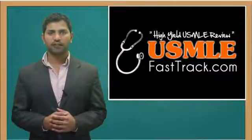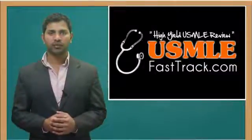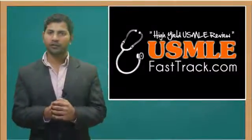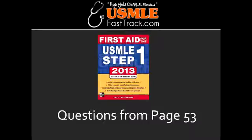Welcome to USMLEFastTrack.com. Today we're covering a section from First Aid for the USMLE Step 1, 2013 edition, page 53: Bias. Bias occurs when there is systemic error or favor in a particular direction.